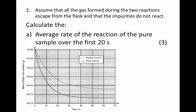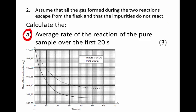We are told to assume that all the gas formed during the two reactions escapes from the flask, and that the impurities do not react. In other words, we can take this change in mass to equal the mass of the carbon dioxide produced by the reaction. Now we are asked to calculate the average rate of reaction of the pure sample for the first 20 seconds.